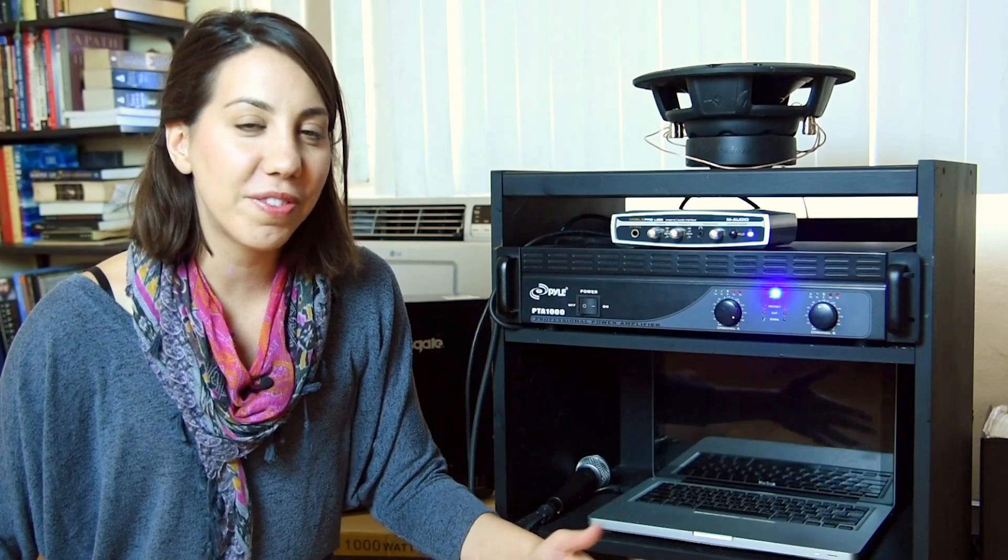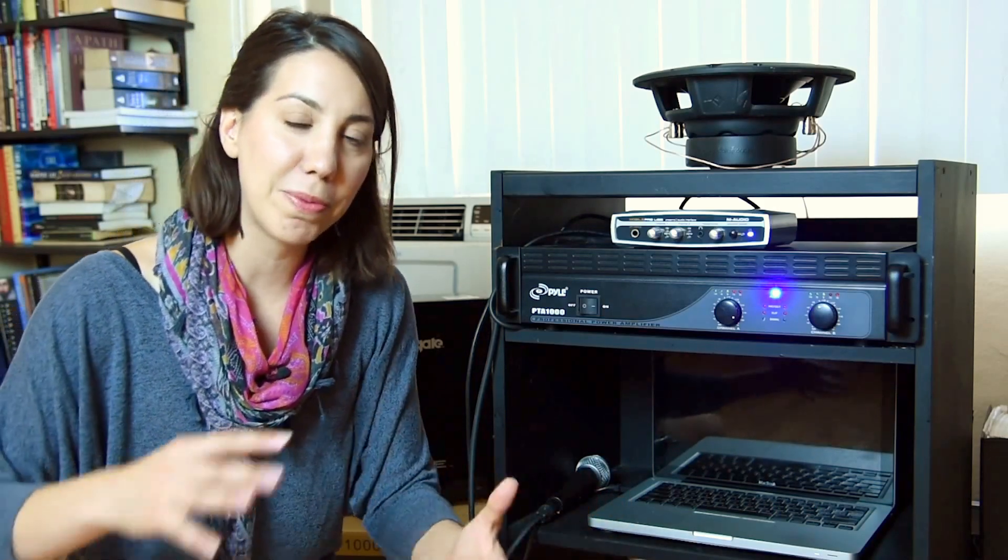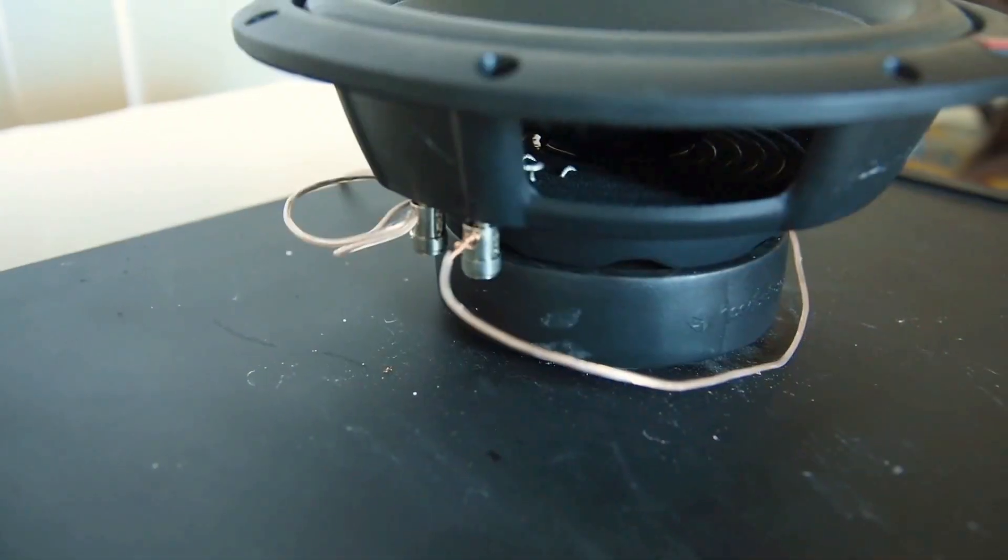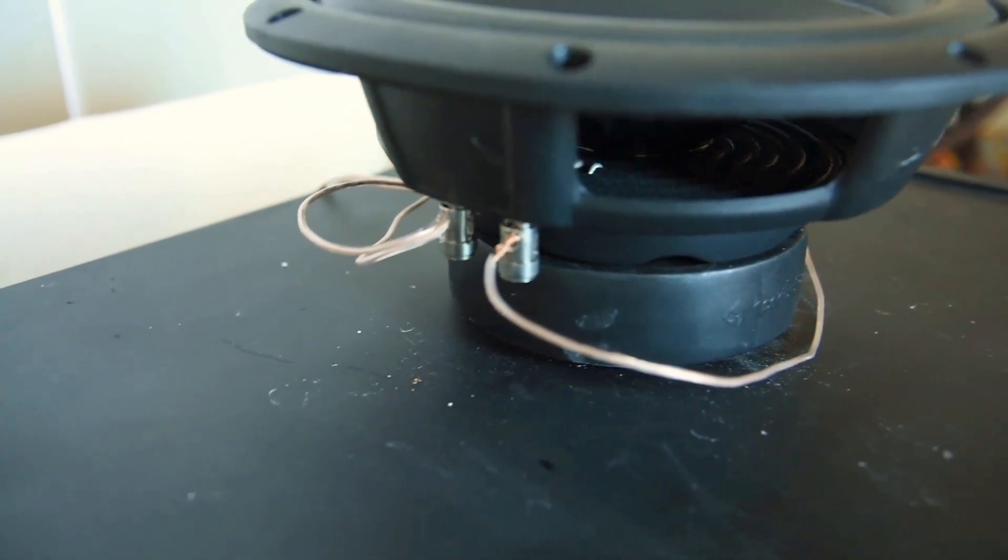So first I'll go over all of the individual equipment that I use and how I put it together, and then I'll go over the software. So I'm starting with this Rockford Fosgate subwoofer here and here is the box for that and as you can see it's connected here on two sides.